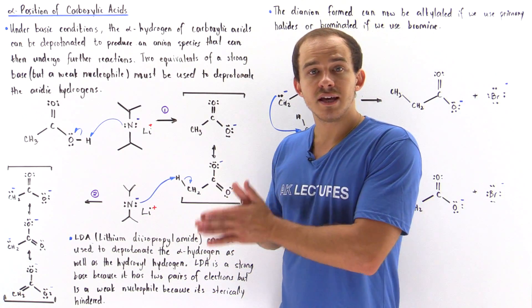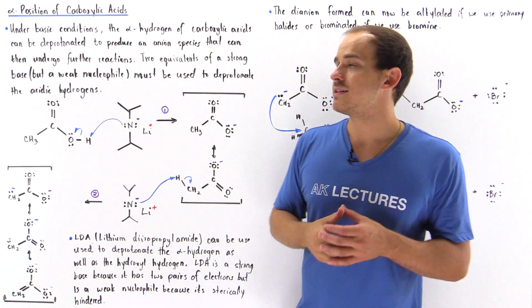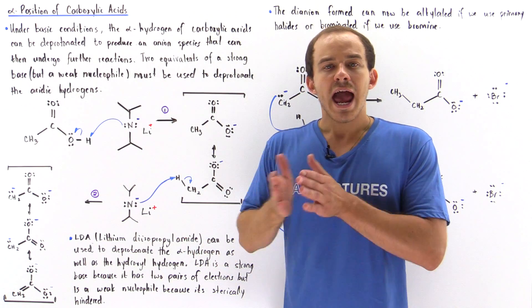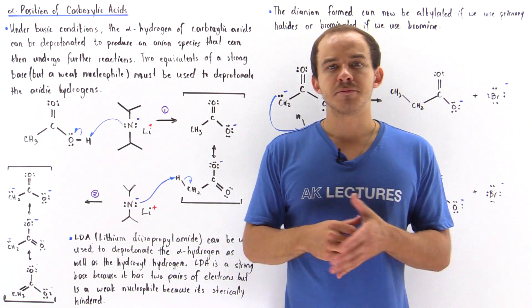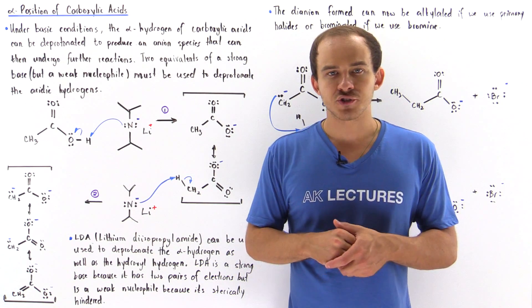As a result, these acidic H atoms attached to the alpha position of the carboxylic acid can be deprotonated and can react in different types of reactions. And this is what we're going to briefly discuss in this lecture.